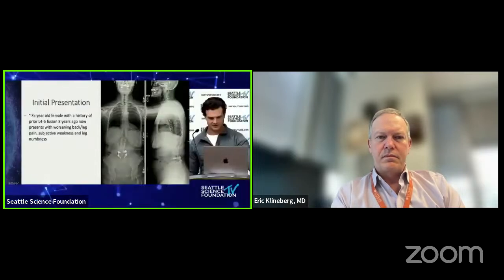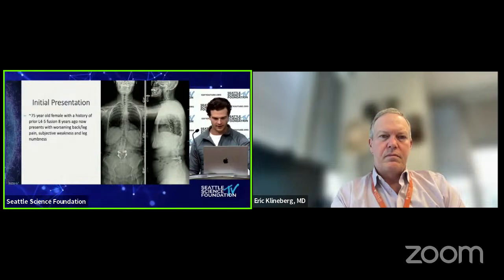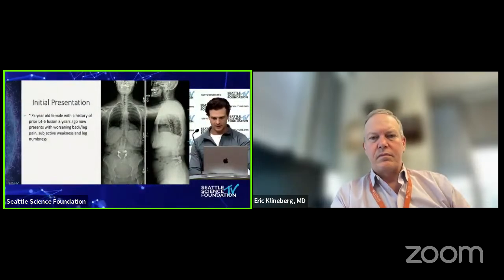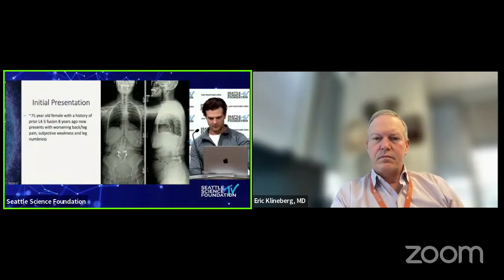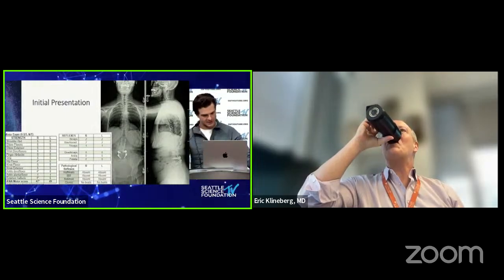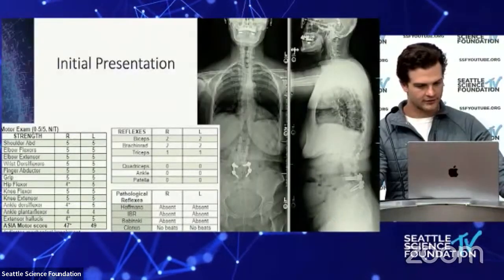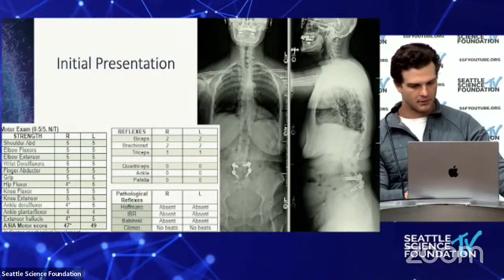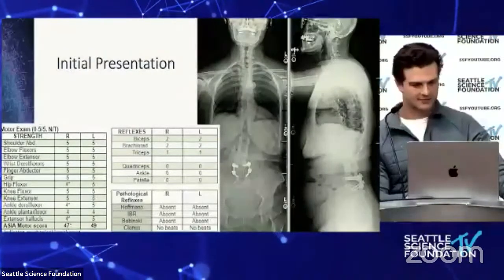This patient is an approximately 75-year-old female who has a history of a prior L4-5 fusion eight years ago and she now presents with worsening low back and leg pain as well as subjective weakness and leg numbness. On her standing scoliosis films she has a slight deformity in her lumbar spine with a lateralisthesis of L2 on L3, but relatively well-preserved sagittal balance.